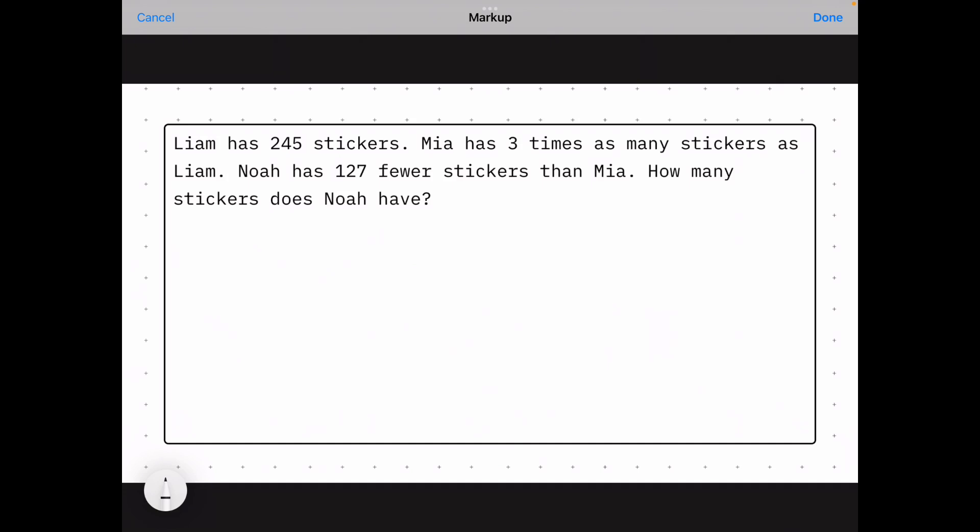So I noticed that we have three different names going on here. We've got Liam, we've got Mia, and we've got Noah. Liam has 245 stickers. I'm going to draw that in a tape diagram. So this one's going to represent Liam.